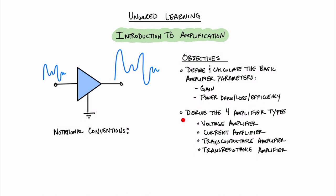And finally at the end of the video we're going to take a look at the four different amplifier types. These are the voltage amplifier, the current amplifier, the transconductance amplifier, and the transresistance amplifier.